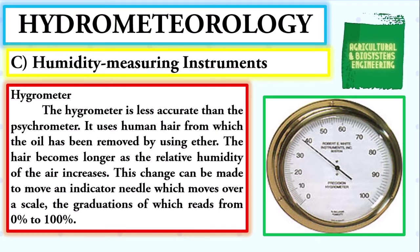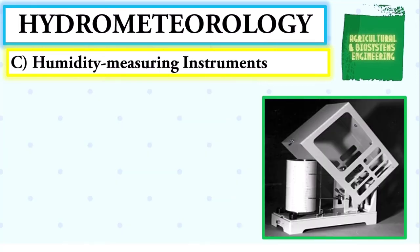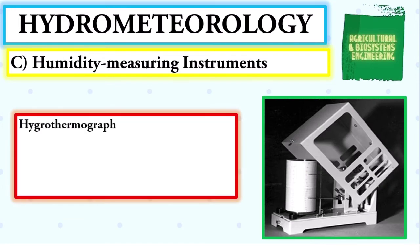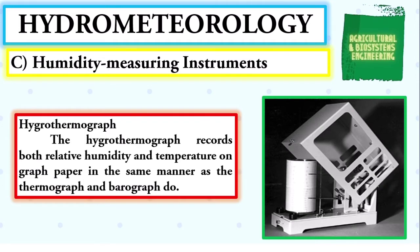Next, the hygrometer — less accurate than the psychrometer. It uses human hair from which the oil has been removed using ether. The hair becomes longer as the relative humidity of the air increases, and this change moves an indicator needle over a scale with graduations reading from zero percent to one hundred percent.